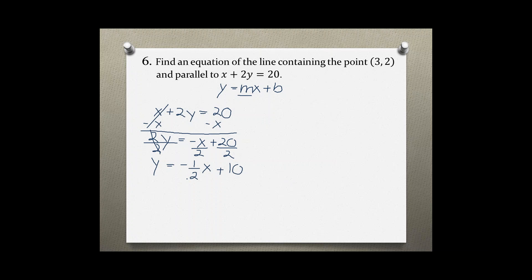Now we know that the slope would be -1/2. Because it says parallel, we know that parallel lines have the same slope, so we would use this slope and the given point.